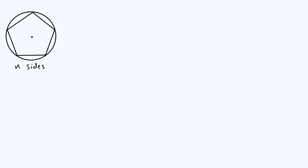Hi everyone. Today we're going to derive a moment of inertia — specifically the moment of inertia of a regular polygon spinning about its center in its own two-dimensional plane. I've drawn here a diagram of a regular-ish pentagon, but we're going to do the derivation in the more general case of an n-sided regular polygon. So let's get on with our derivation.